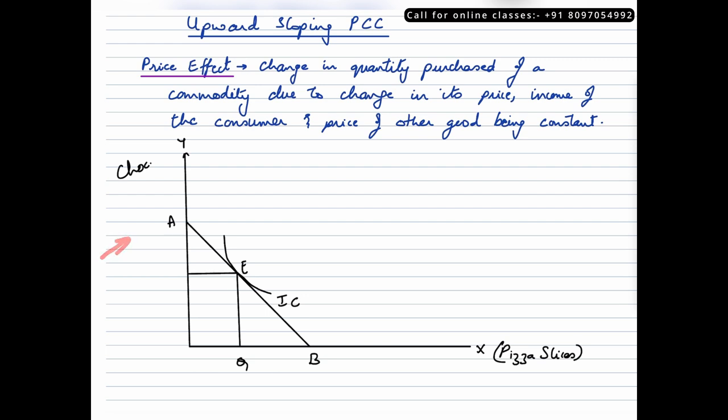This is the diagram that we'll be taking a look at. We have chocolates on the y-axis, pizza slices on the x-axis. E is the point of equilibrium, IC is the indifference curve, AB is the budget line. So at point E, consumer is consuming Q quantity of pizza slices and R quantity of chocolates.